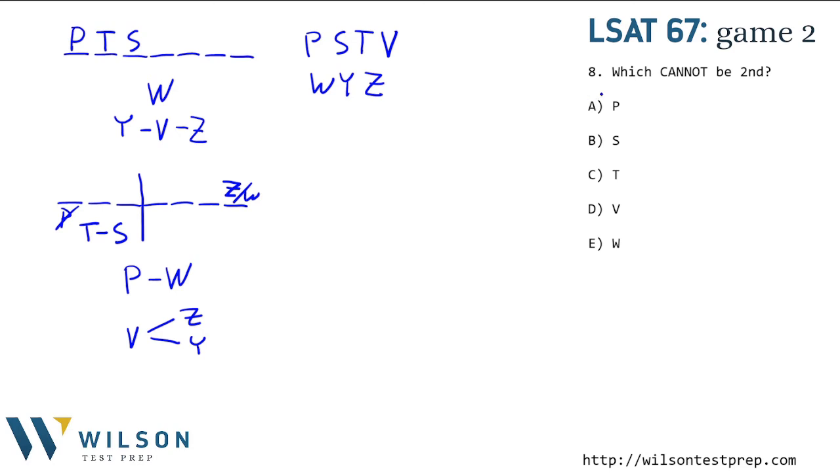Number eight asks, which of the following cannot be second? Let's look through them one at a time. P. Could P be second? We could put P second, have T and S first and third, and other things. Okay. S. We could have T first, then S, and then whatever else satisfies the conditions. T. Yeah, we have T second up here. V. We could have T and then V and then S, and then whatever else. W. Okay, this is interesting. If W is second, then P has to be first, but P is not allowed to be first. So W cannot be second.